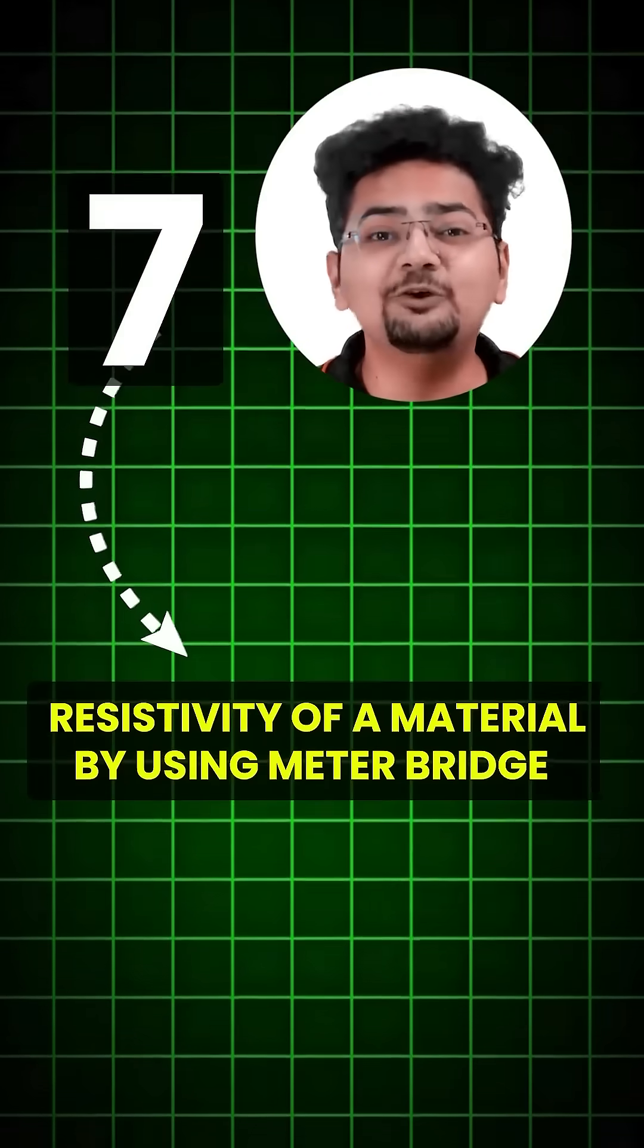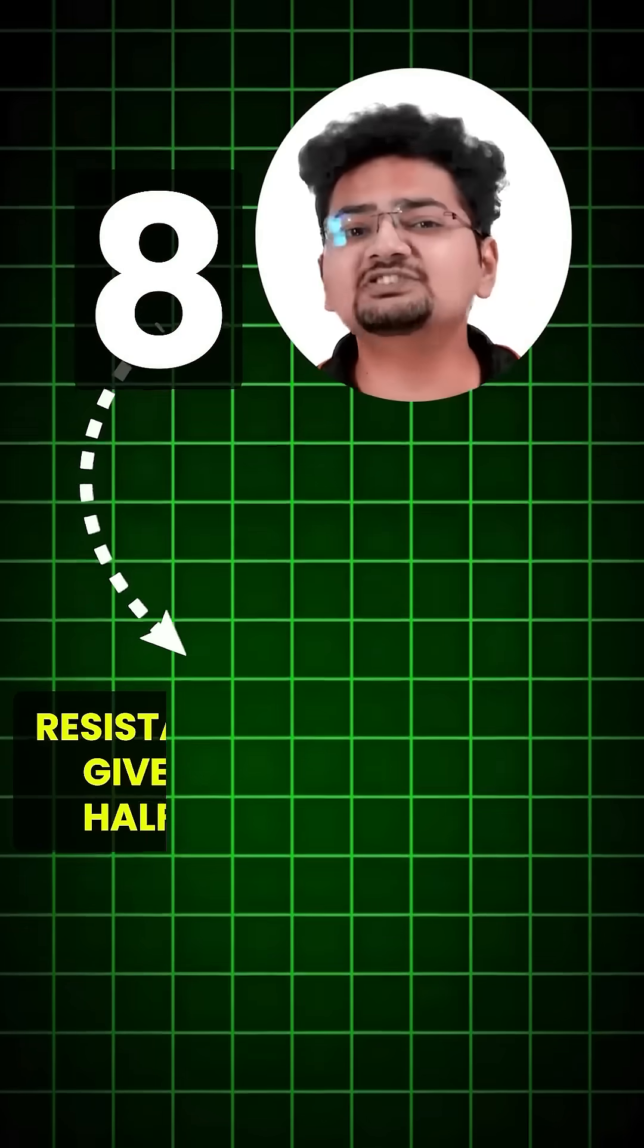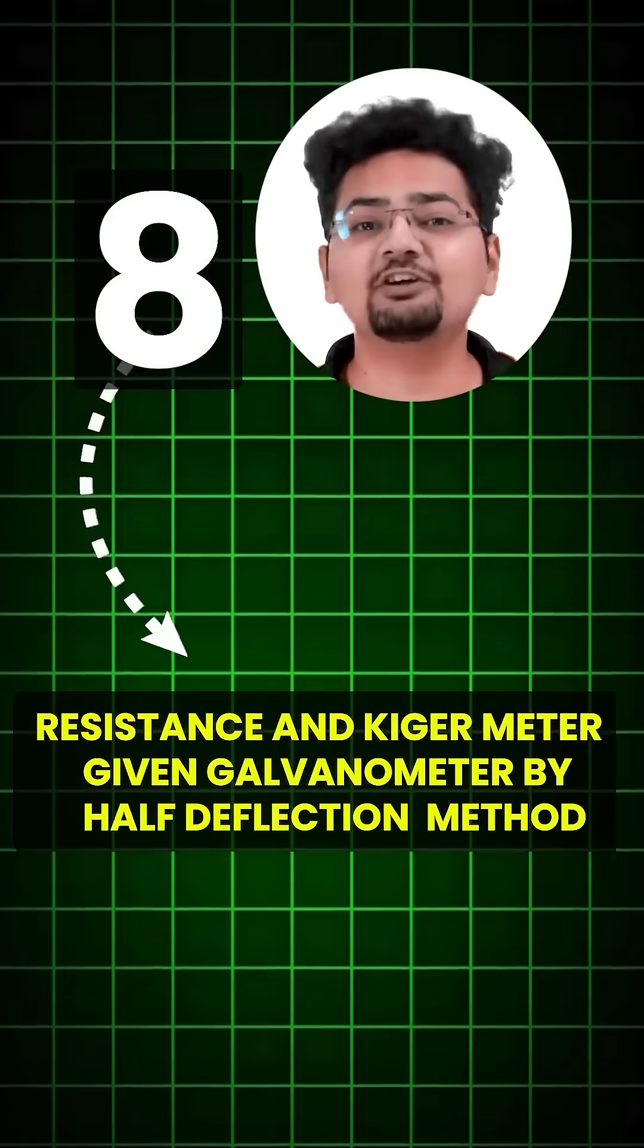Seventh, Resistivity of a material by using meter bridge. Eighth, Resistance and figure of merit of a given galvanometer by half-deflection method.